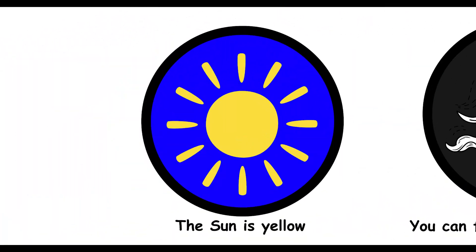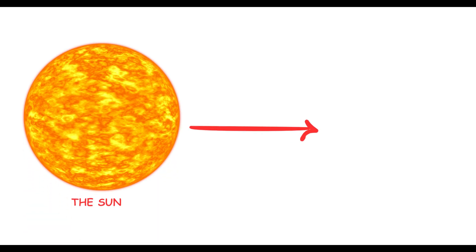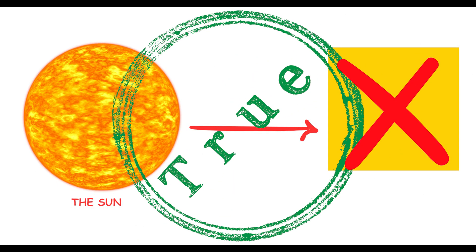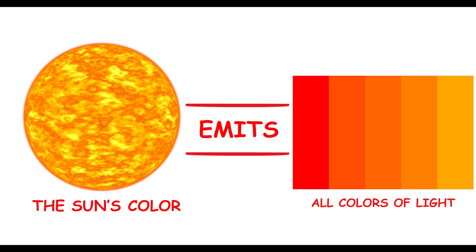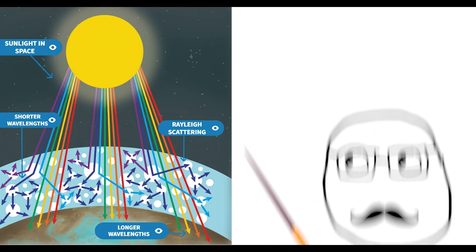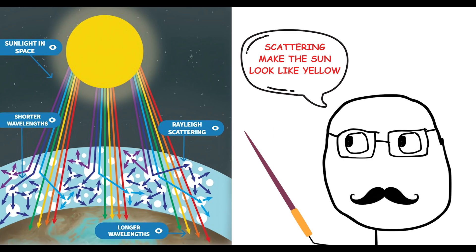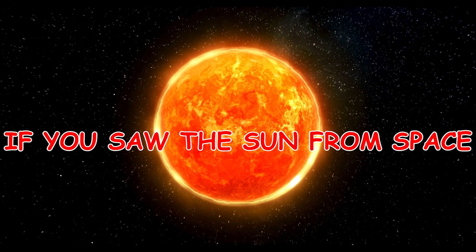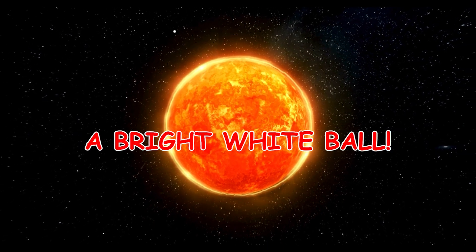The sun is yellow. Did you know the sun isn't actually yellow? It's true! The sun emits all colors of light which combine to appear white. Our atmosphere scatters shorter wavelengths, making the sun look yellow from Earth. So if you saw the sun from space, it would look more like a bright white ball.